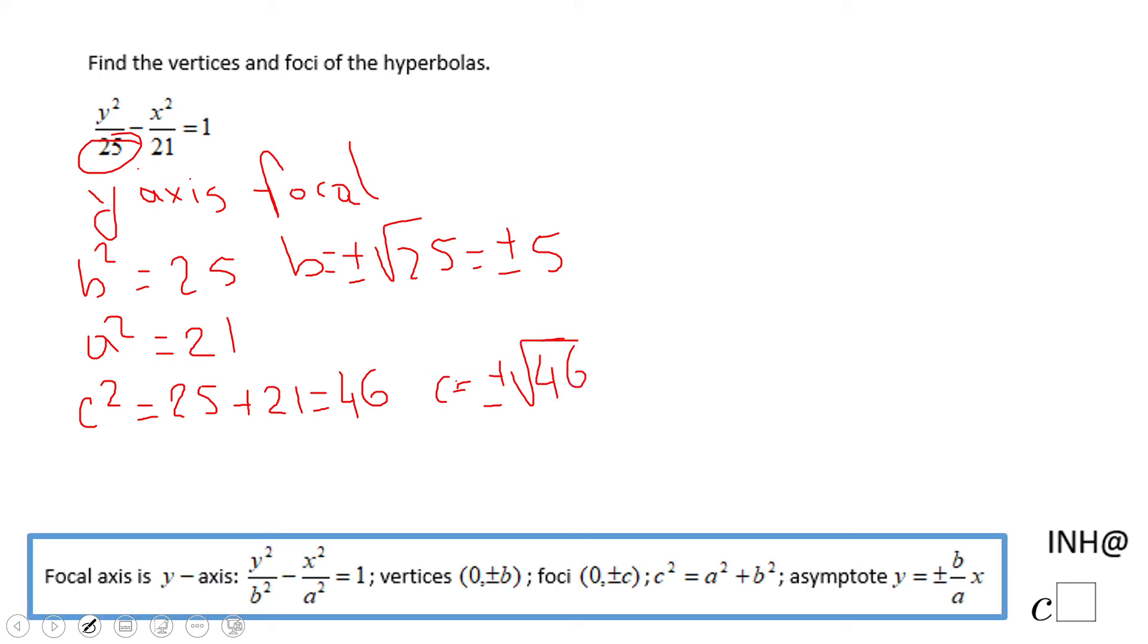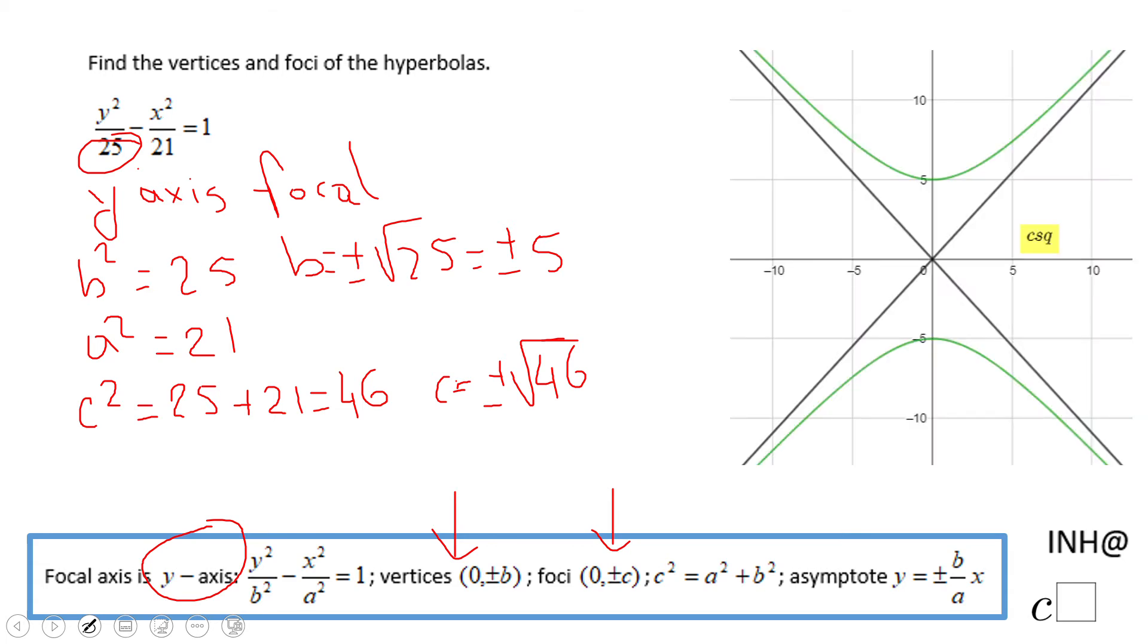Now we have the algebraic way to find the vertices and foci of a hyperbola for which the focal axis is the y-axis. But let's also take a look at the picture, because that's usually the way I do it. First, I know the center is at (0, 0) for this type of hyperbola, which is right here.